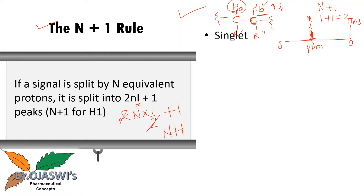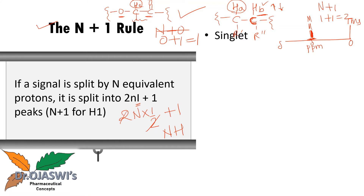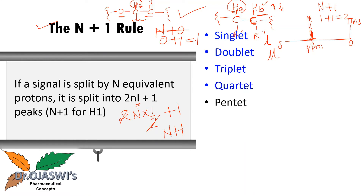If N=0 (no proton on adjacent carbon — for example a carbonyl group on one side and no proton adjacent), then 0+1 gives 1, so the peak is a singlet. With one adjacent proton you get a doublet, then triplet, quartet, pentet, hextet, heptet. These are the peak multiplicities.